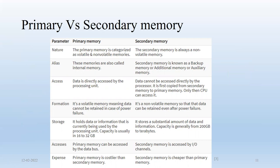First, nature: primary memory can be volatile or non-volatile. Volatile means data will be lost in case of power loss. Secondary memory is always non-volatile, meaning data will be safely stored. Primary memory is also called internal memory, while secondary is called additional, auxiliary, or backup. In terms of access, data is directly accessed by the processing unit from primary memory, but secondary memory data can't be accessed directly — it must go through cache, then primary memory, then secondary.